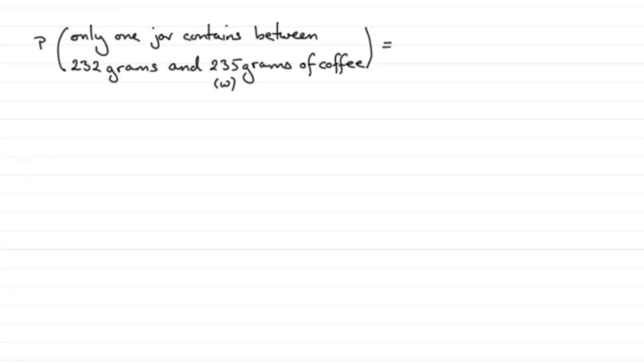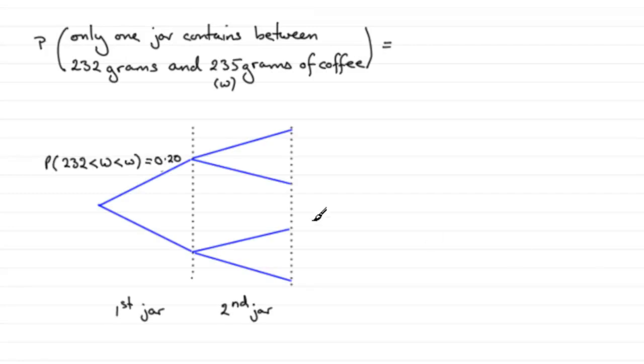Well, in my mind, I imagine a tree diagram something like this. I haven't filled it all in because it would just take too long, but we've got our first jar of coffee and the second jar of coffee, and when you select your first jar, it will either contain between 232 grams and W grams, in this case 235 grams, with a probability of 0.20.